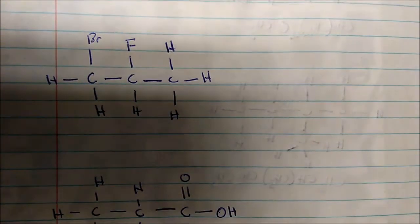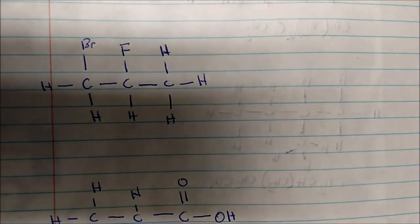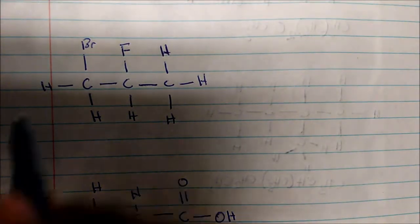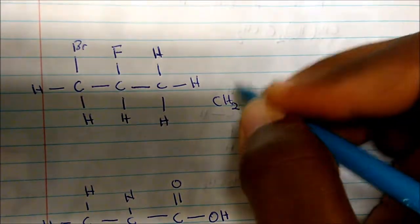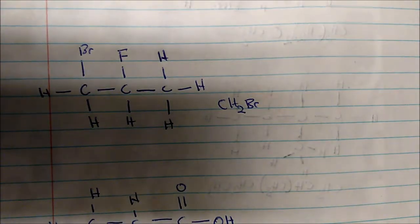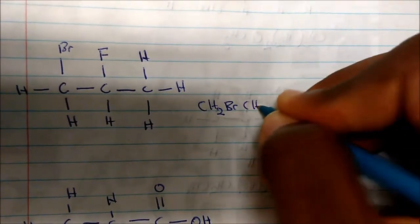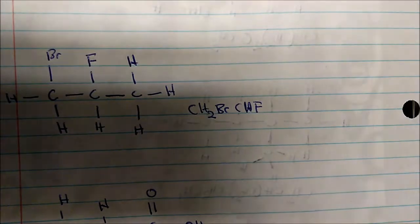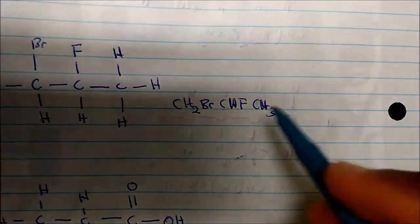Here we have to be careful — these substituents are called alkyl halides: bromine, fluorine, iodine, and so on. To condense this, I see a CH2 bonded to bromine — so that's CH2Br. Then I have a CH bonded to fluorine — that's CHF. Then we have CH3. So the condensed formula is CH2Br-CHF-CH3.